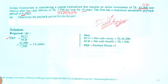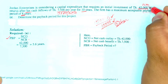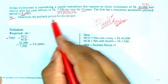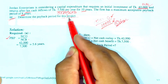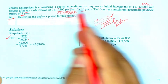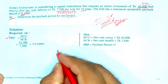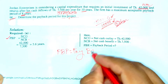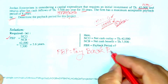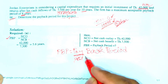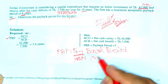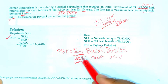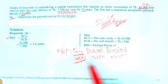We need to carefully determine how many years it takes for this project to recover the initial investment of 42,000 taka. We are required to determine the payback period for this project — that is, how long it will take to recover the invested amount. PBP stands for Payback Period, meaning how long it takes for a project's invested capital to be returned.